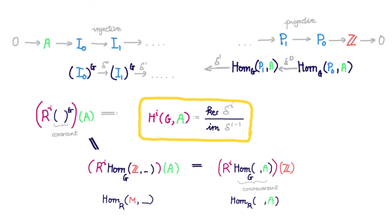This is a phenomena that holds in a general category of modules over any fixed ring R. In such a category, if we are given an R module M and an R module A, we can form this covariant functor and this contravariant functor.